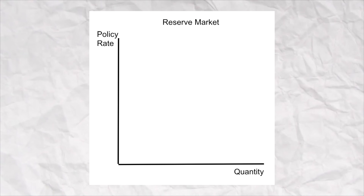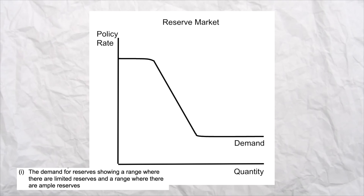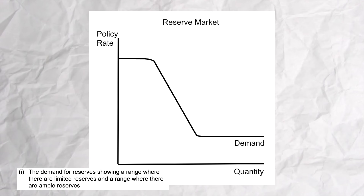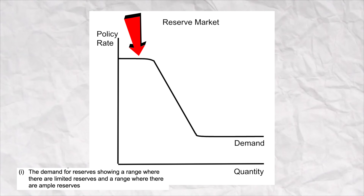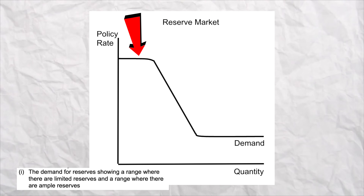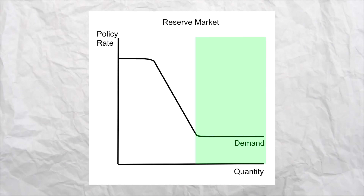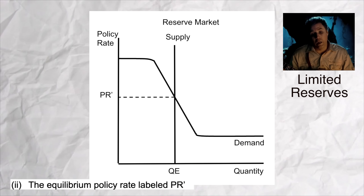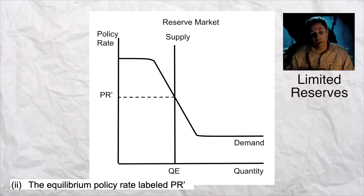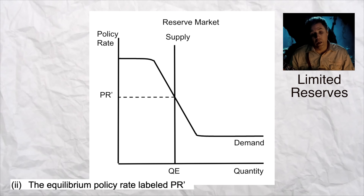First is the labeling. On the y-axis, you can put 'policy rate.' On the x-axis, you can put 'quantity' for the quantity of reserves. For part A-i, you draw a demand curve that's horizontal, then downward sloping, and then horizontal again. Technically you wouldn't have to draw this horizontal part on top, but I'm going to leave it in there for now. This side represents limited reserves; over here is ample reserves.